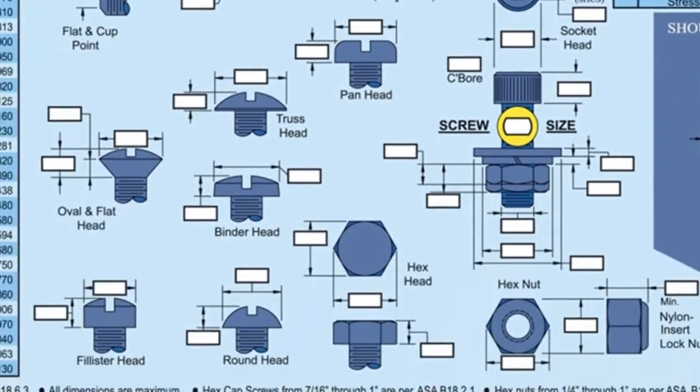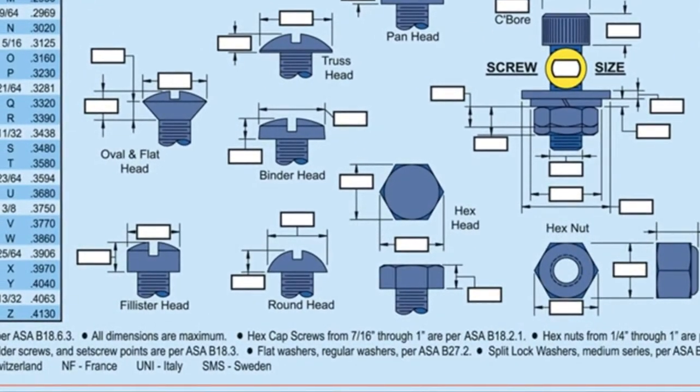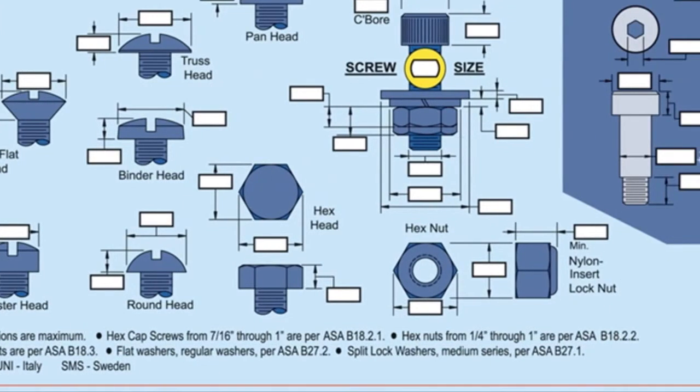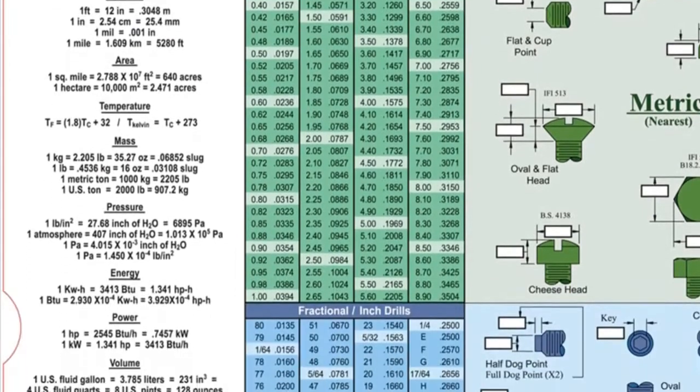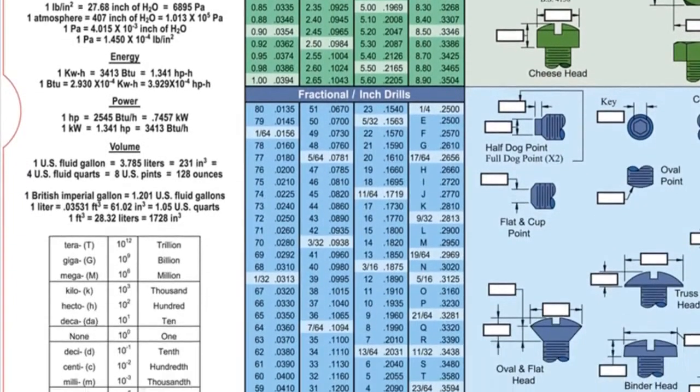Standards for the fasteners are at the bottom of the chart or next to the fastener itself. Illustrations of head markings for different bolt grades, helpful unit conversions, and prefixes for numbers are displayed vertically in the left side column.